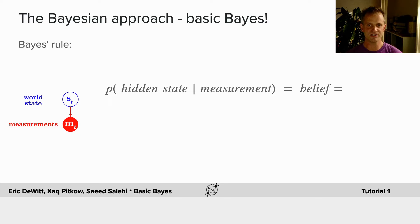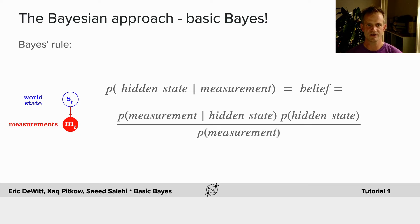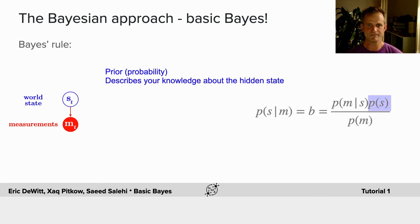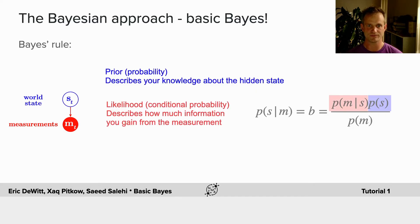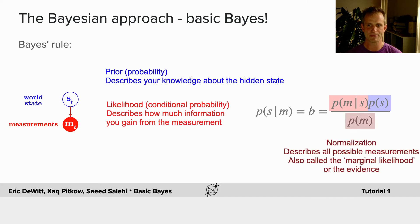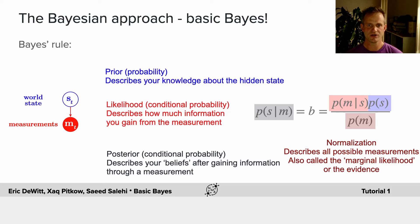Or, what's our subjective belief about the state of the world? We can think of this as the probability of the measurement given the hidden state, times the prior probability of the hidden state, all normalized by the overall probability of seeing that measurement. The prior probability describes your knowledge about the hidden state up until now. The likelihood, which is a conditional probability, describes how much information you gain from the measurement. The normalization describes all of the possible measurements — it's also called the marginal likelihood, or the evidence. And the posterior, which is a conditional probability, describes your beliefs after gaining information through a measurement — it's really a probability distribution.